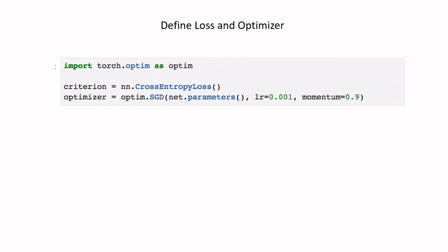This slide shows the definition of the loss and optimizer. We use cross-entropy loss as our criterion. The optimizer is SGD — Stochastic Gradient Descent — with a learning rate of 0.001 and a momentum term of 0.9.